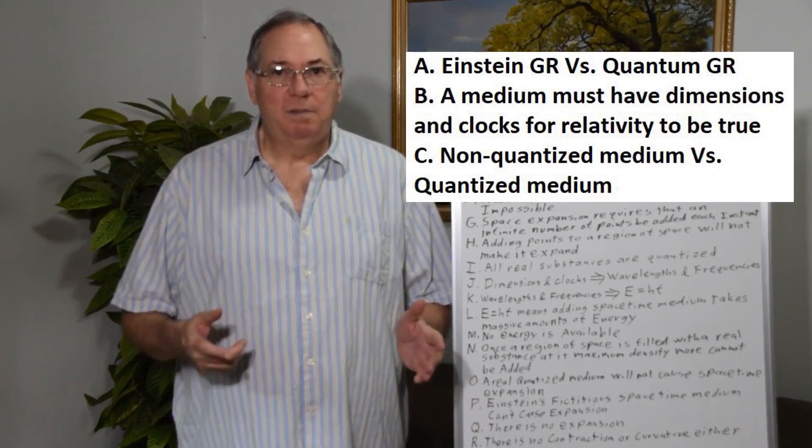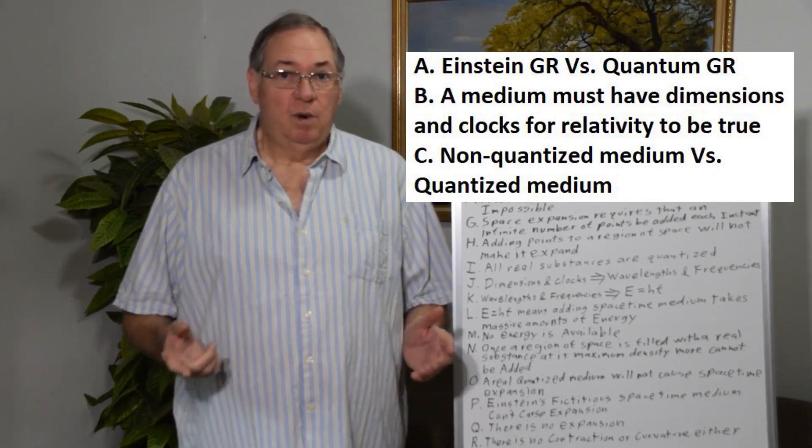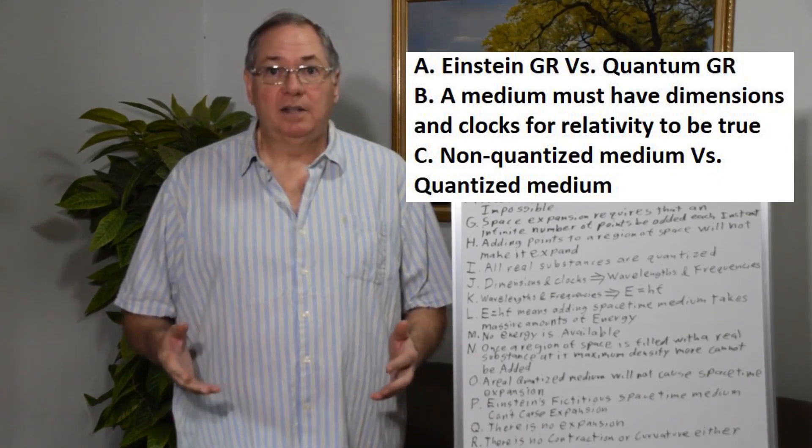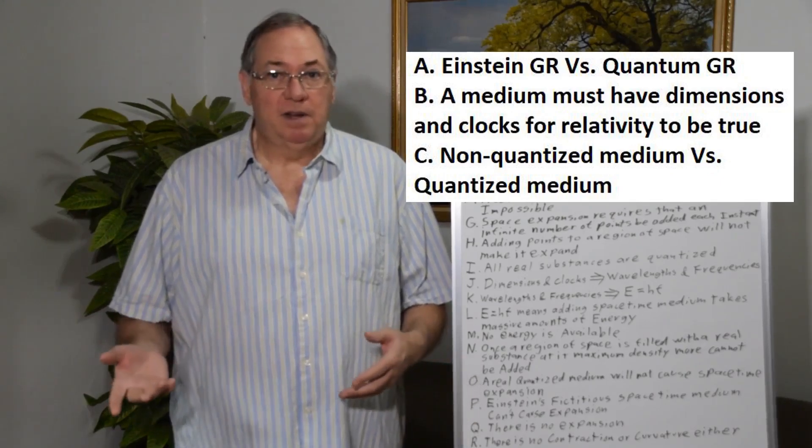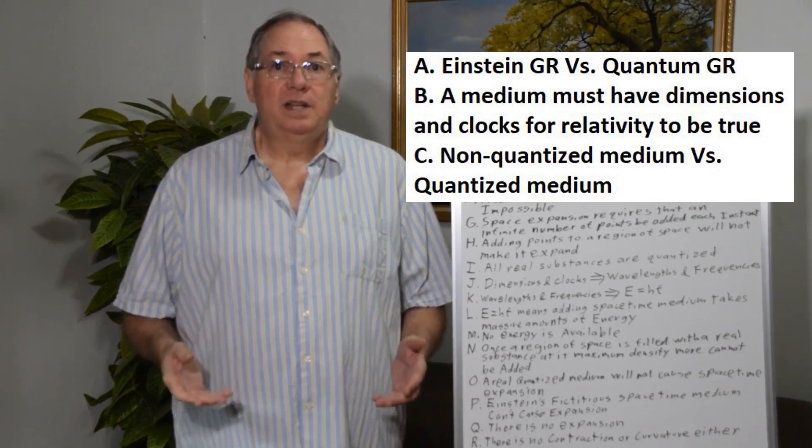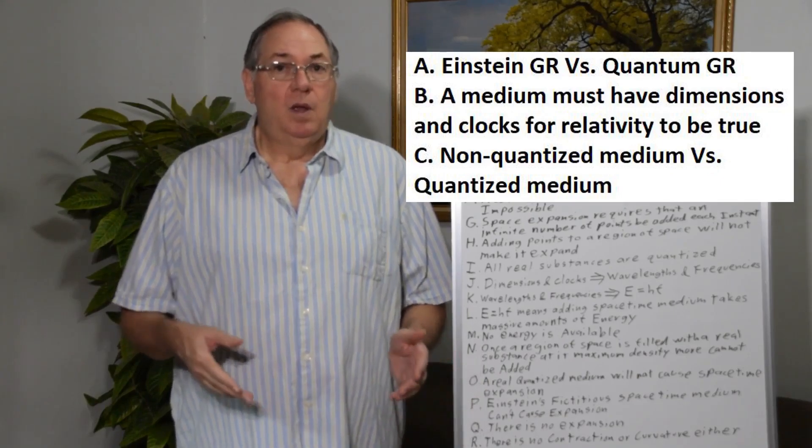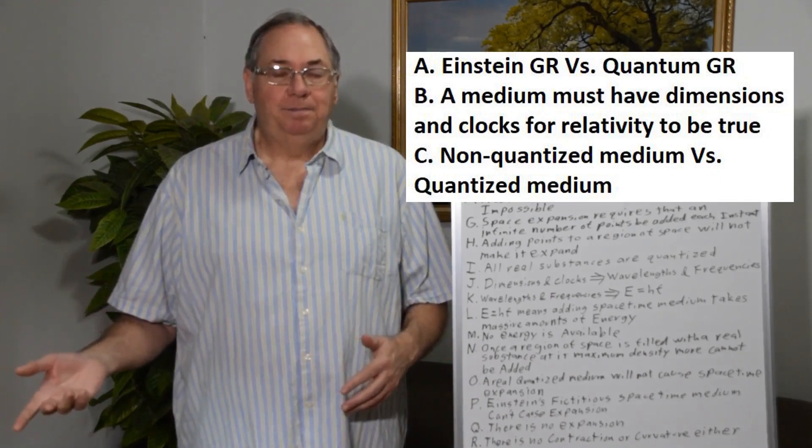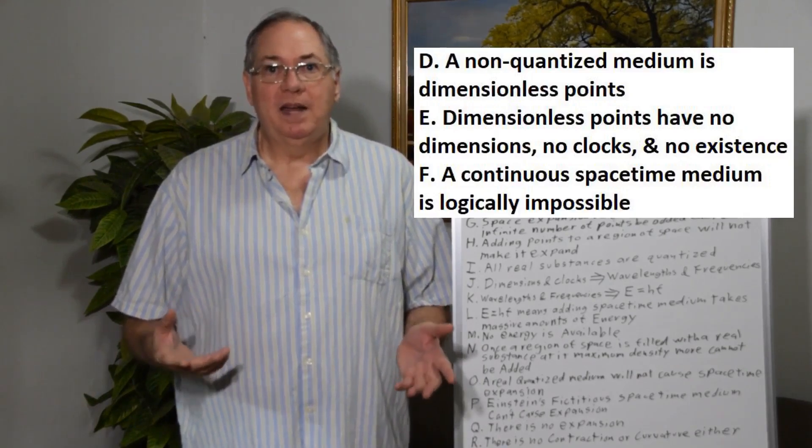You must have a medium with dimensions and clocks for relativity to be true. If there weren't dimensions and clocks throughout space, there would be no relativity theory, no special relativity, no general relativity. So it really brings it down to a question of whether we have a non-quantized medium or a quantized medium.